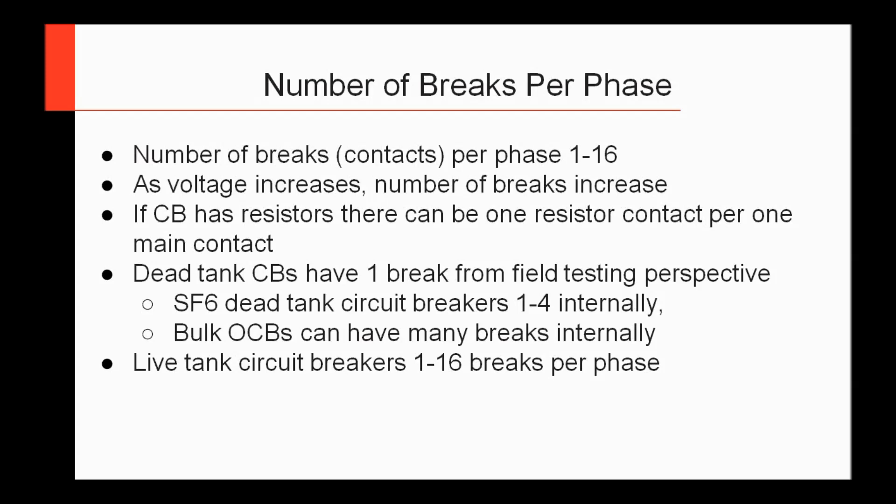One thing to consider is the number of breaks per phase. You can actually have anywhere from one break per phase — a total of three breaks, one for each phase — up to 16 breaks per phase. As the voltage increases, the number of breaks increases as well. You might have one break up to about 245 kV, and then as you get up to 362 kV and above, these numbers start increasing. In some of the older breakers at 765 kV, you could have up to 16 breaks per phase.